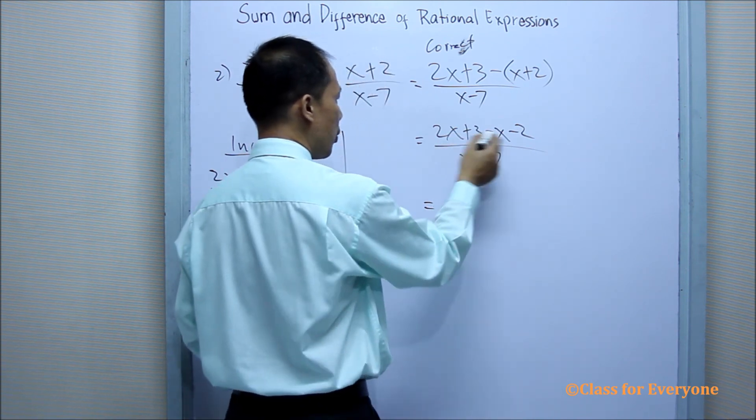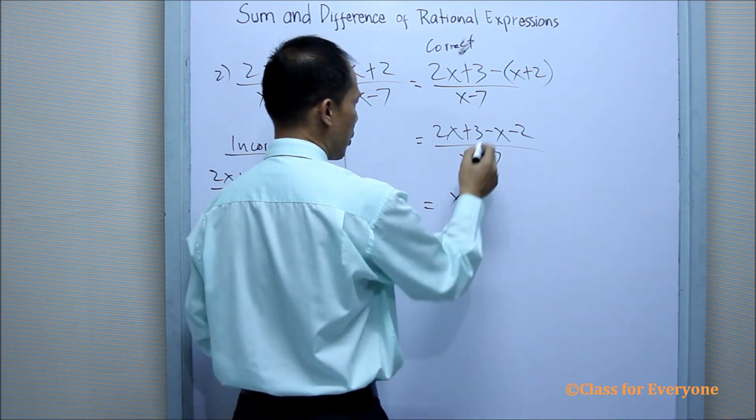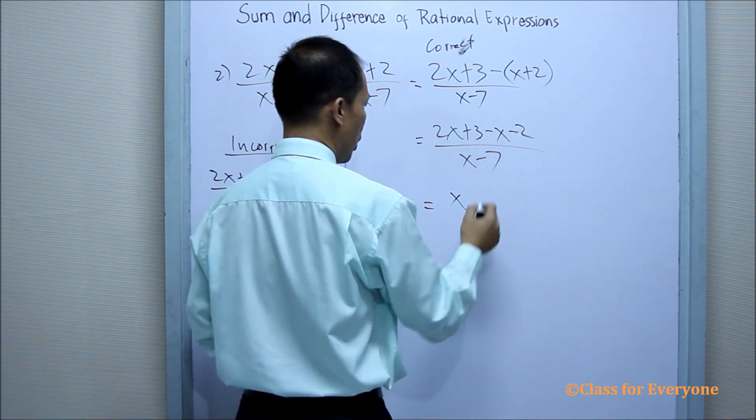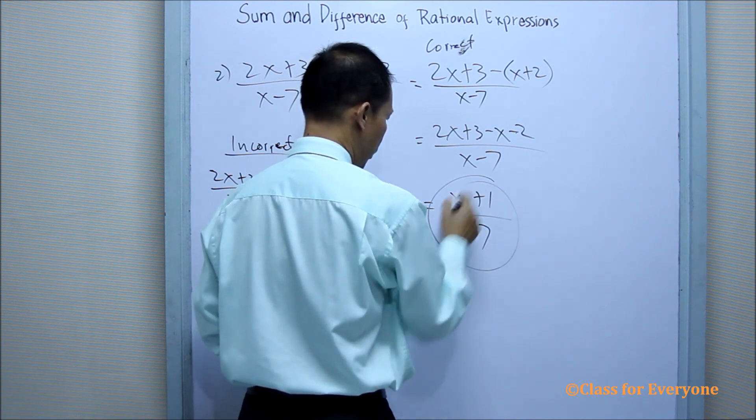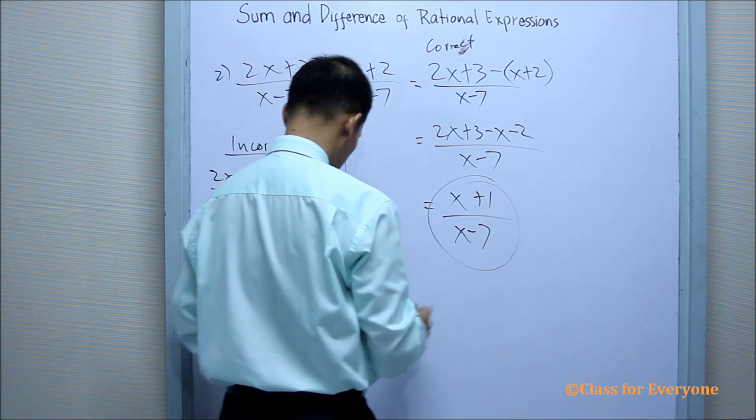Now, combining like terms, 2x minus x, you have x. 3 minus 2 is positive 1 over x minus 7. That is the correct one. This is wrong.